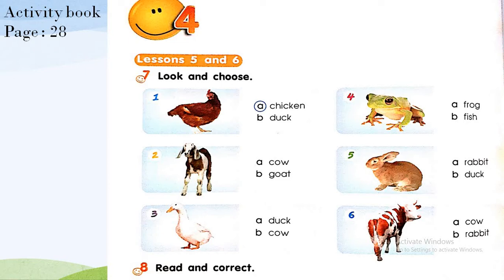So you look at the picture — it's clear, it's a chicken. Picture two: cow or goat? It's a goat. Very good.